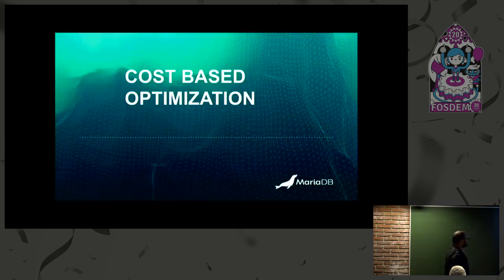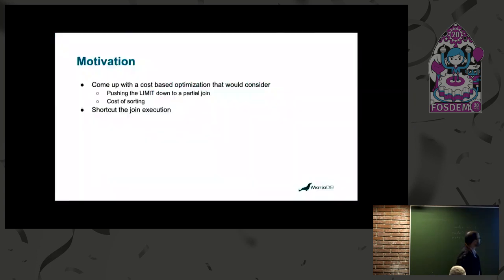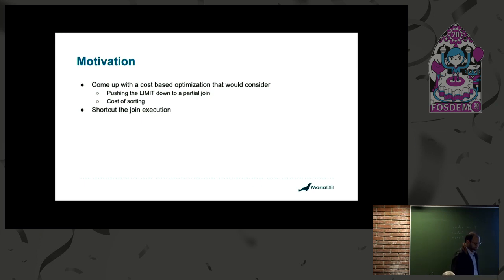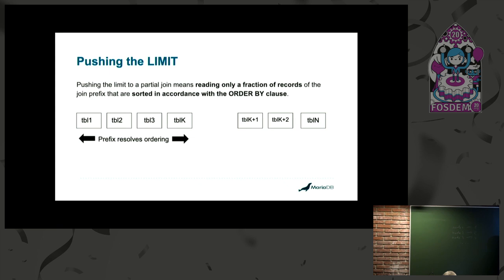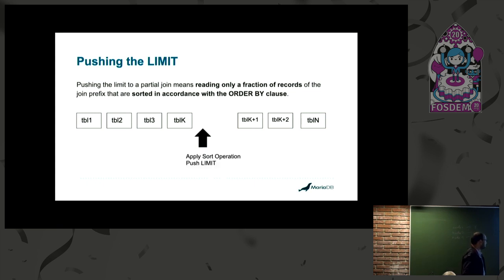What is new in MariaDB 10.5 is a cost-based optimization where the join planner takes into consideration both the cost of sorting and the LIMIT. The motivation is pushing the limit and incorporating the cost of sorting — the main goal being to shortcut the join execution for LIMIT. To consider the limit, we push it by finding a join prefix that can resolve the ORDER BY clause. That is the prime condition: the prefix can be sorted by the ORDER BY clause, and then you push the limit. Inside the join planner code, we apply the sort operation and then push the limit.